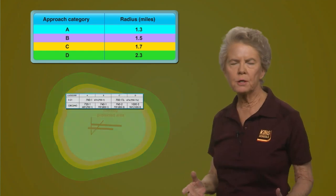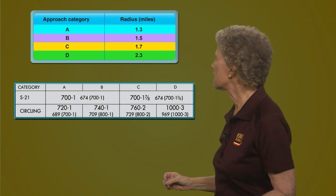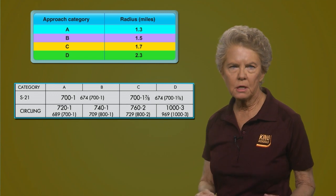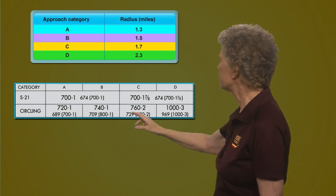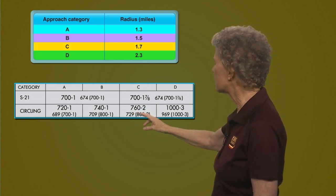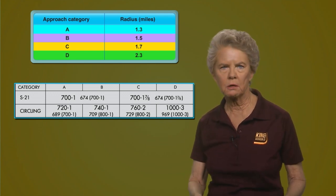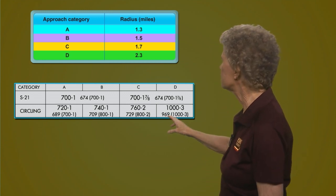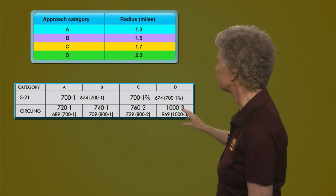So on this approach, for a category B Bravo aircraft, the MDA goes up to 740 feet. For a category C aircraft, not only does the MDA go up to 760 feet, but the visibility goes up to two statute miles. And if you're a category D delta aircraft, which most airline airplanes are, your MDA goes up to 1,000 feet and your required visibility goes up to three statute miles.